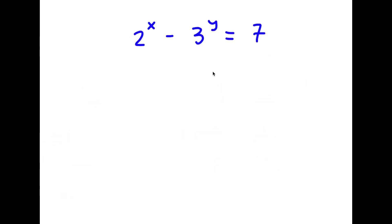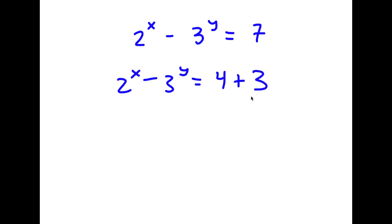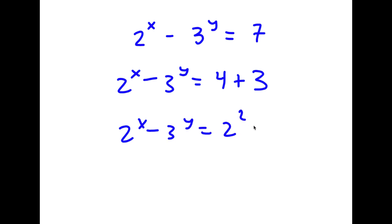In this problem, I have 2 to the power of x minus 3 to the power of y is equal to 7. I'm going to start by rewriting 7 as 4 plus 3. So now I have 2^x minus 3^y equals 4 plus 3, and 4 is the same thing as 2 squared.